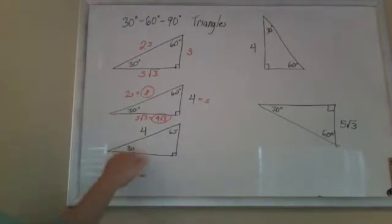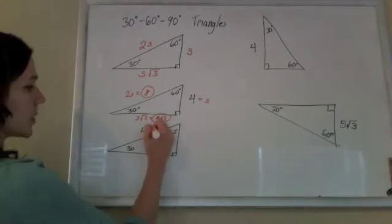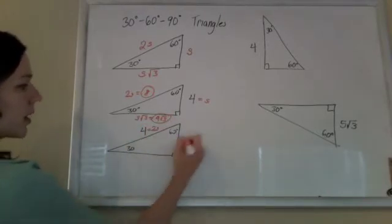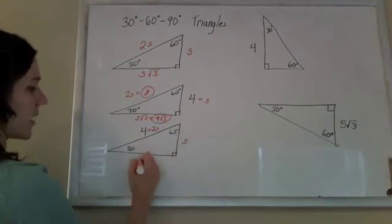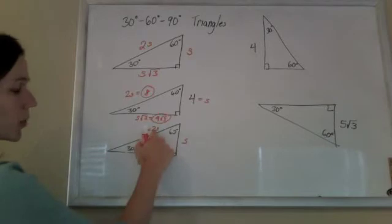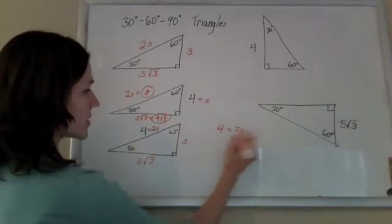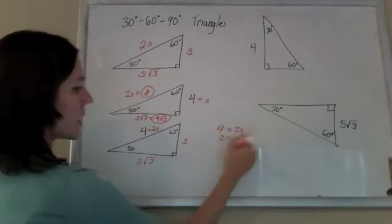When we go on to the next one, here they give us the hypotenuse. So this is supposed to be the 2S part. And again, the shorter leg is the S, and the longer leg is the S root 3. So 4 equals 2S, right? If 4 equals 2S, then S must equal 2.